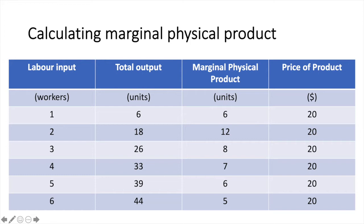With no workers we can safely assume that output is 0. Once the first worker is hired, they create an additional 6 units of output — this is also their marginal physical product. As we hire the second worker, total output increases to 18, an increase of 12 units. We divide that increase of 12 by 1 to give us a marginal physical product of 12. We continue this calculation all the way down, and you'll notice that the marginal physical product is decreasing, which is exactly what we'd expect given the law of diminishing marginal returns. The final column contains the price of the product, which is constant at $20, indicating that the firm is operating in a perfectly competitive market. This won't always be true in all problems, so bear that in mind.